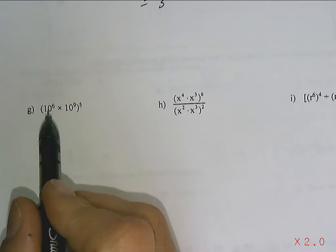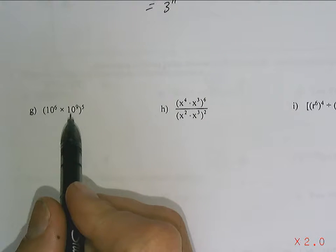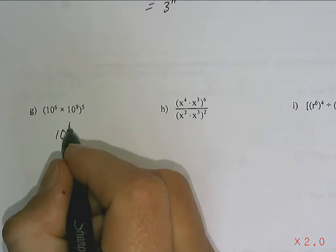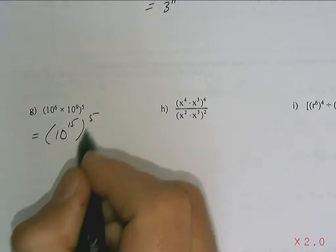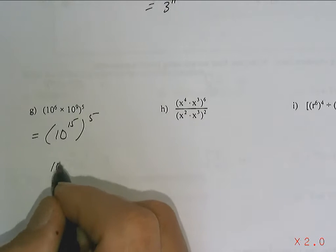Here we go. We got 10 to the 6 times 10 to the 9. So, that's 10 to the 15 on the inside. And then the power to the power is going to be 10 to the 75.